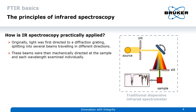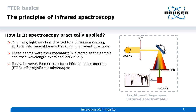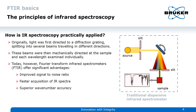With the rise of improved electronics and CPU processing power, Fourier transform infrared spectrometers superseded these traditional instruments because FTIR spectroscopy offers significant advantages: an improved signal-to-noise ratio, it is a lot faster, and it shows superior wavenumber accuracy when laser calibration is applied.